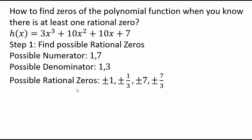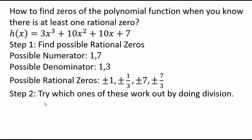Now that you know these are possibilities, how do we know which one works? We have to try each one, do long division, and see which one gives us remainder zero. In order to do long division, what are we going to long divide by? For example, if x equals 1 is a zero, then we would divide our polynomial function by x minus the zero, so in this case it will be x minus 1. If 1 doesn't work, then we will try 1 third, or maybe 7 thirds.